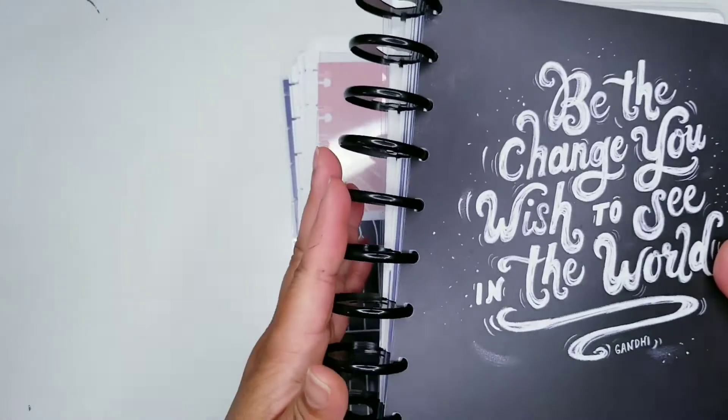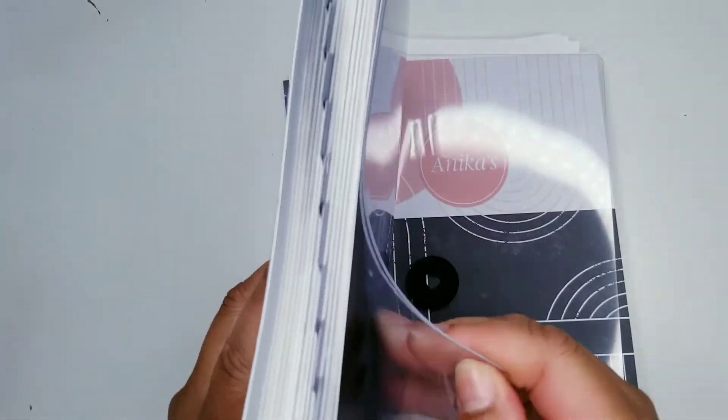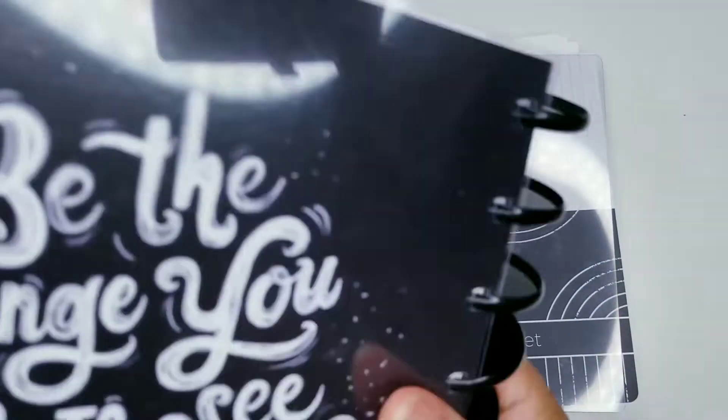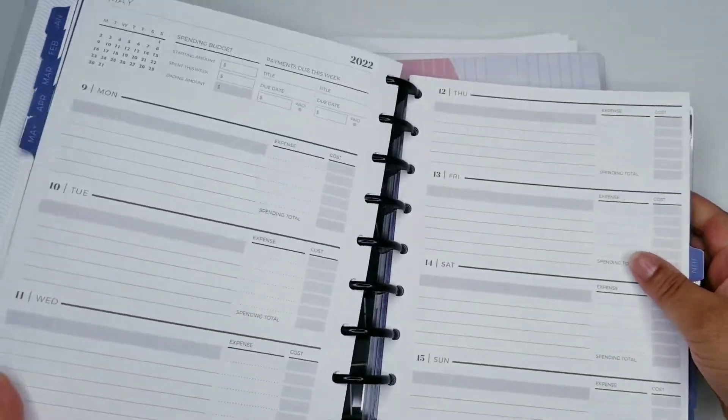So this is the other one that I have. It is from Plum Paper. And y'all, I love it. I use it. This is my spending information. I'm not going to show you that. But I have my goals and I use this planner.